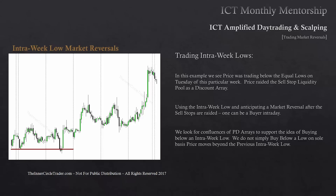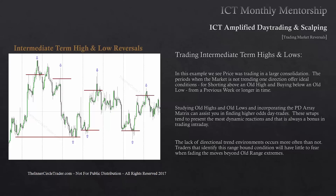Trading intermediate-term highs and lows. In this chart, price is trading in a large consolidation, and periods when the market is not trending in one direction offer ideal conditions for shorting above an old high and buying below an old low from a previous week or longer. Intermediate-term reference points can be as short as intra-week or as far back as a previous month or two. Old lows and highs are gold mines because large fund traders — the whales — place their orders and stop losses around these higher timeframe highs and lows. When a market lacks directional trend, those conditions offer more opportunities to trade like this.